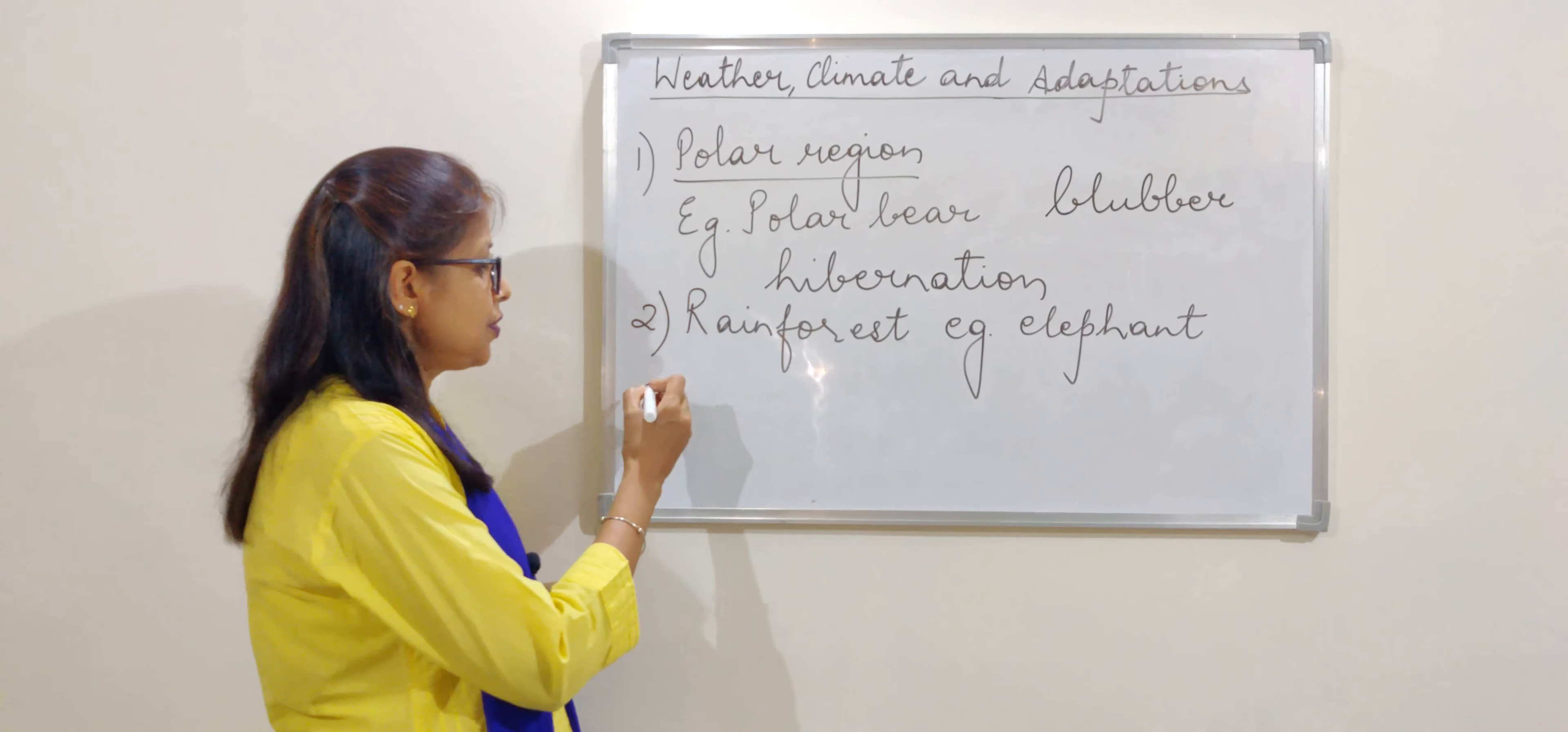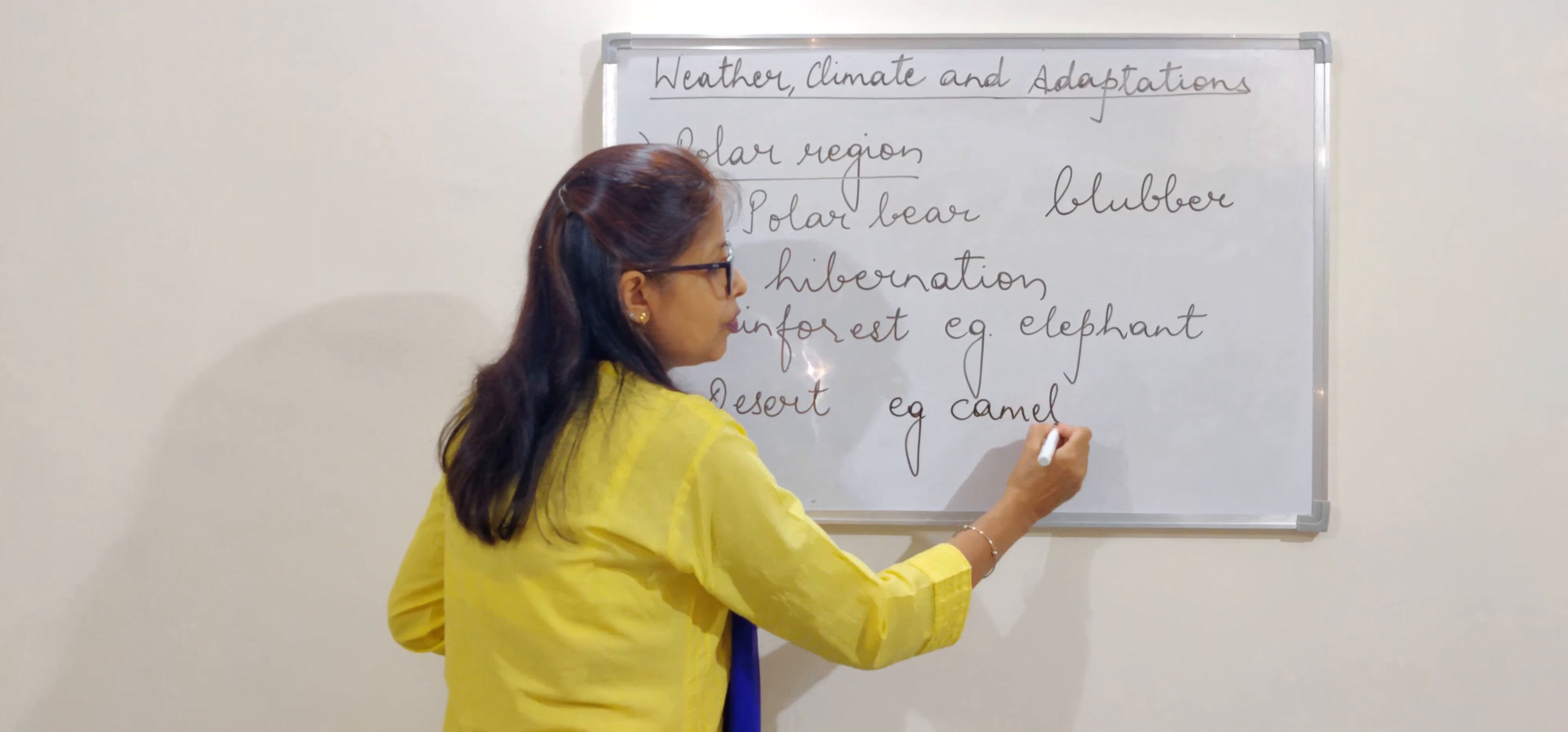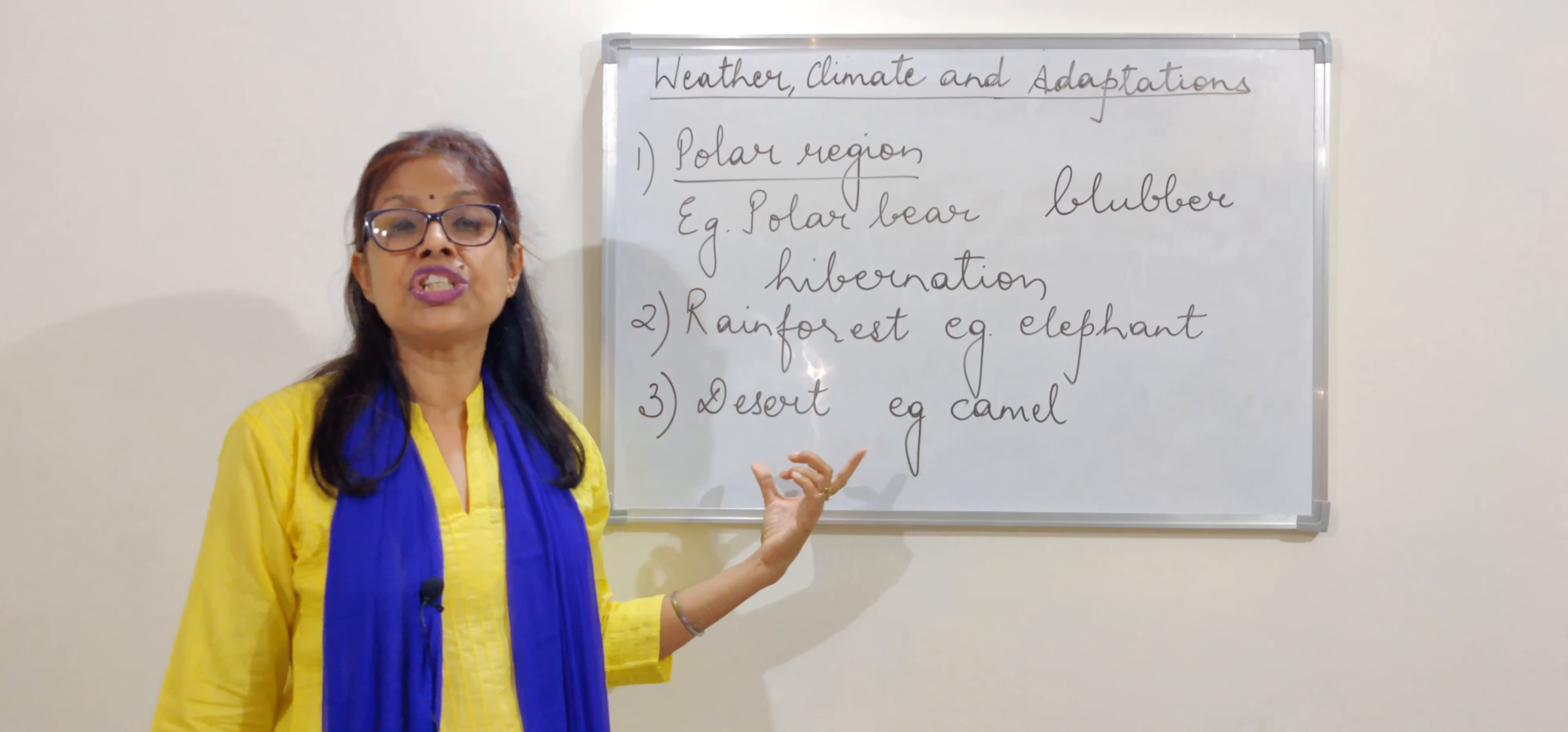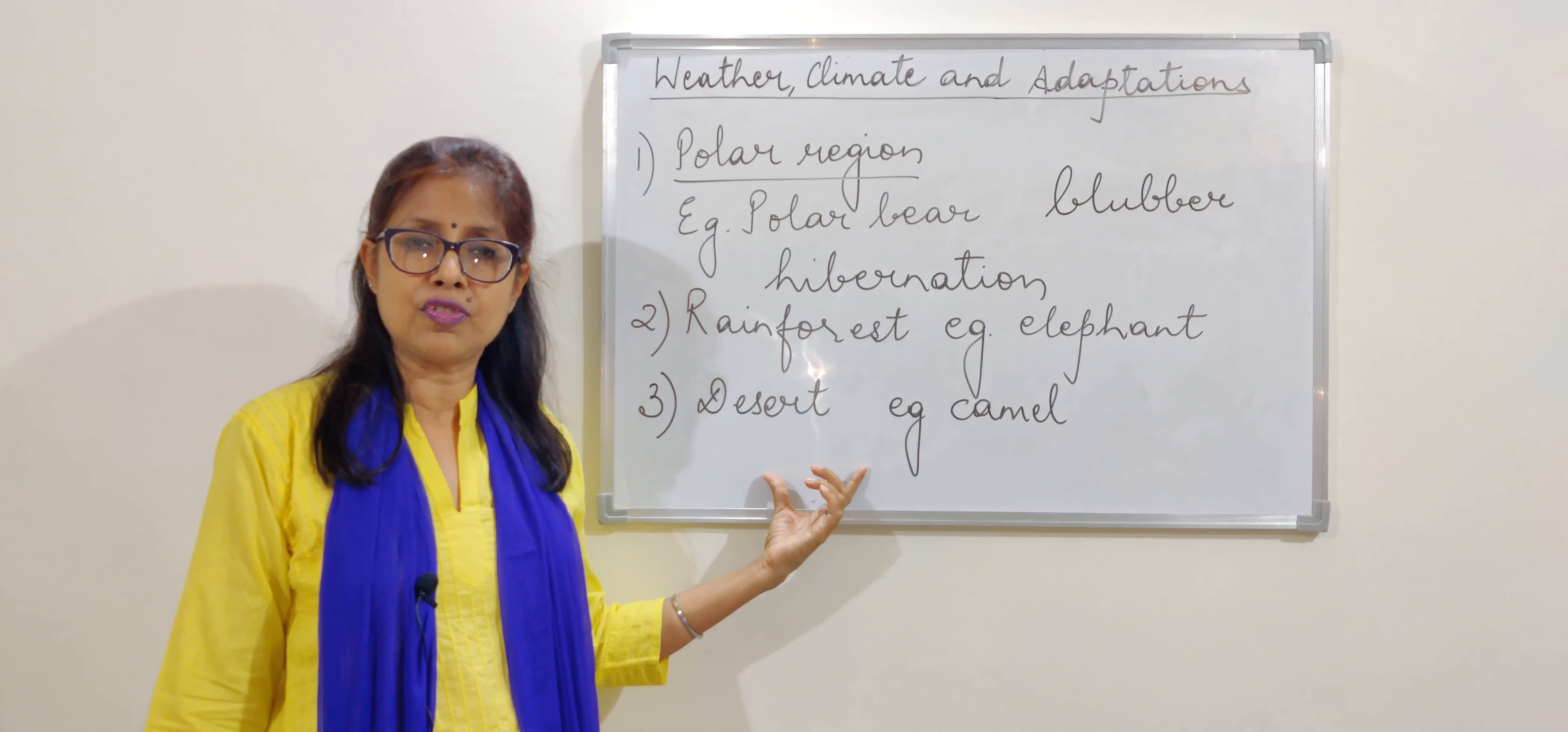Then the third one, we come to the desert area. The best example is that of camel. We all know camel is said to be the ship of the desert. Because it can survive in a condition where there is very less water or scarcity of water. In these areas, there are hardly any rainfalls.